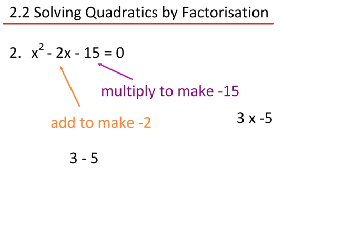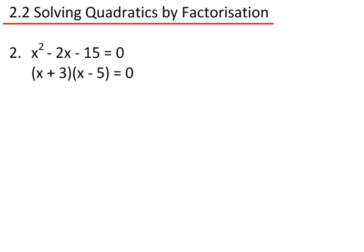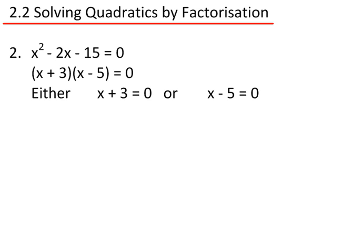So I must need 3 and minus 5. This will give me x plus 3 in brackets, times x minus 5 in brackets, equals 0. So either x plus 3 equals 0, or x minus 5 equals 0. Solving this, x must be equal to minus 3, or x is equal to 5.